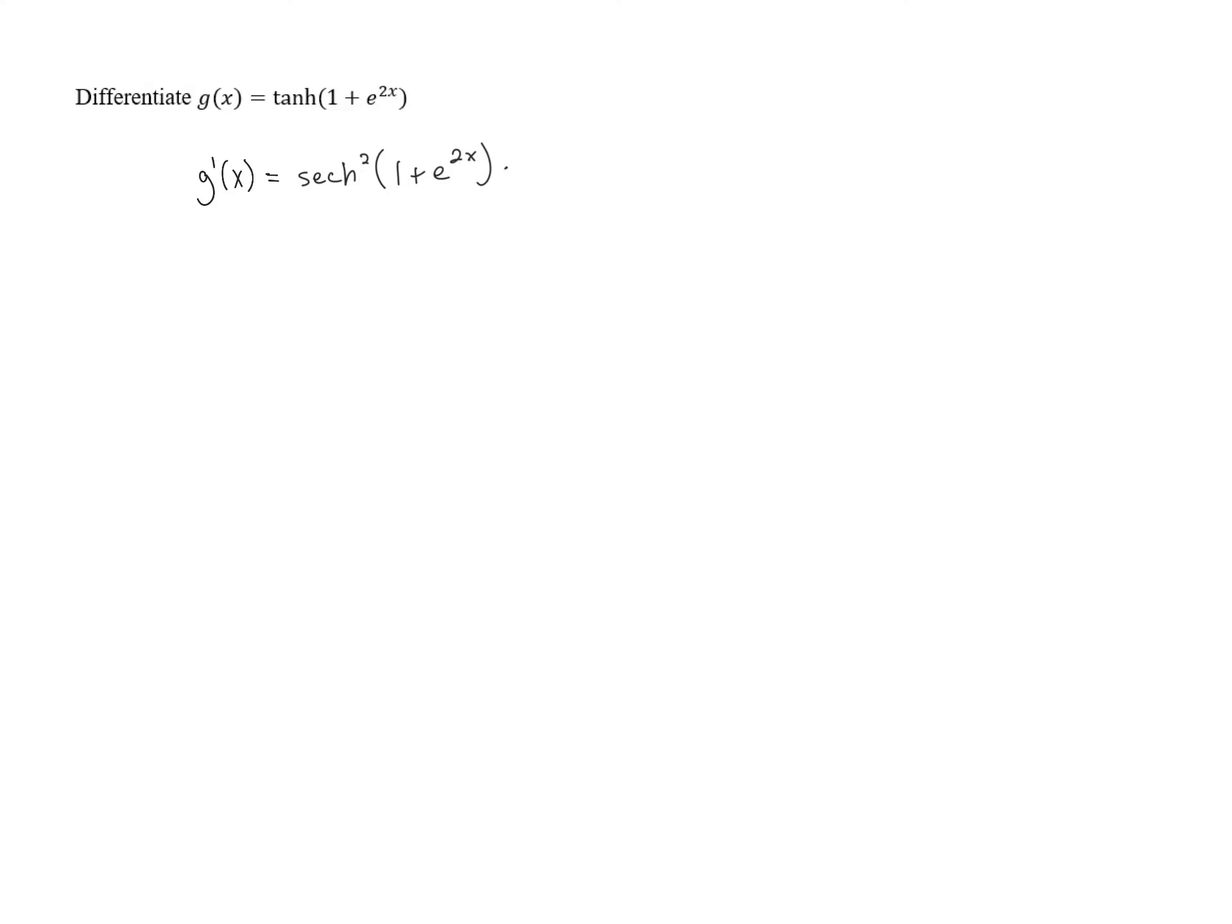The derivative of e to the u is itself. So we're going to have e to the 2x as the derivative of that outer function. But then we still have to differentiate the innermost function, which is 2x, and the derivative of 2x is 2.